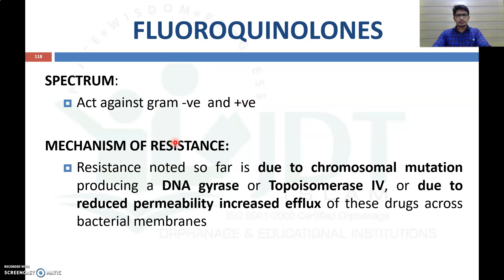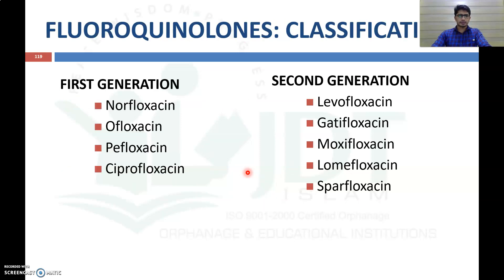The mechanism of resistance to fluoroquinolones noted so far is due to chromosomal mutation producing altered DNA gyrase or topoisomerase 4, or it may be due to reduced permeability or increased efflux of the drug across the bacterial membrane.